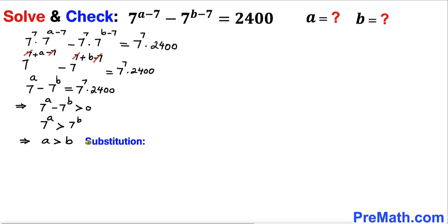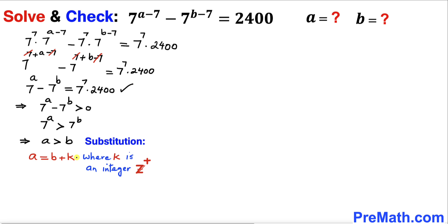To make our job easier, let's do a substitution. Let a equals b plus k, where k is a positive integer. After substituting, our equation becomes 7 power b plus k, minus 7 power b, equals 7 power 7 times 2400.